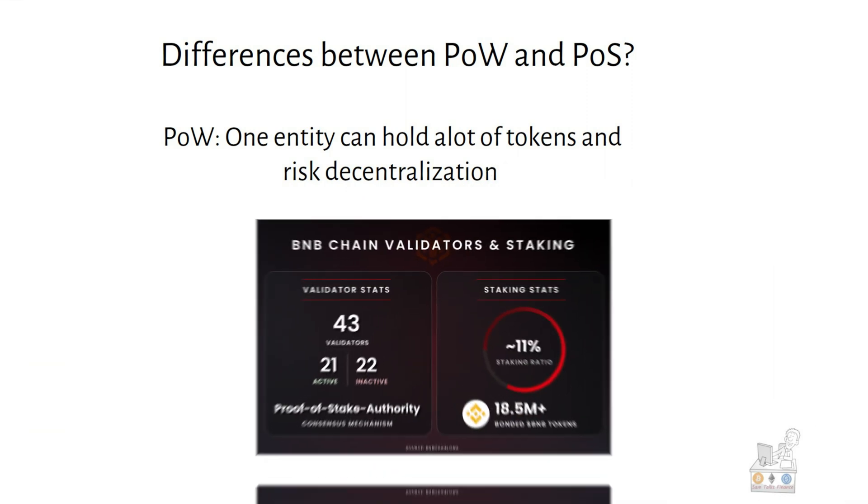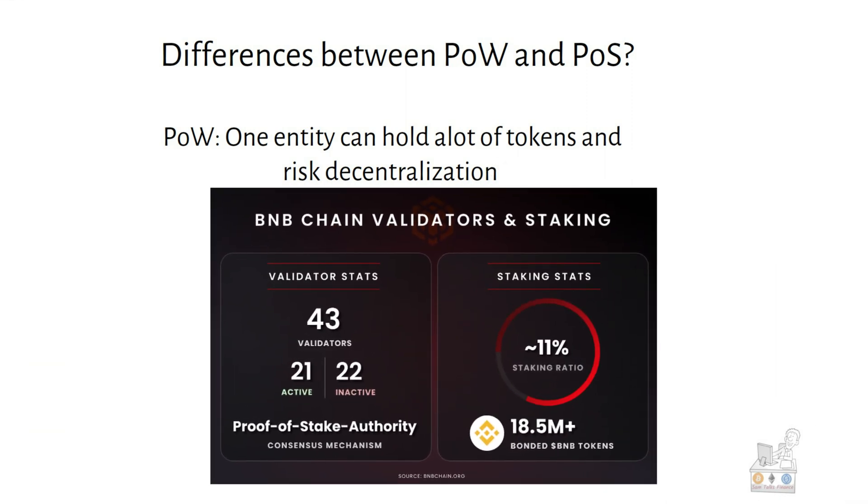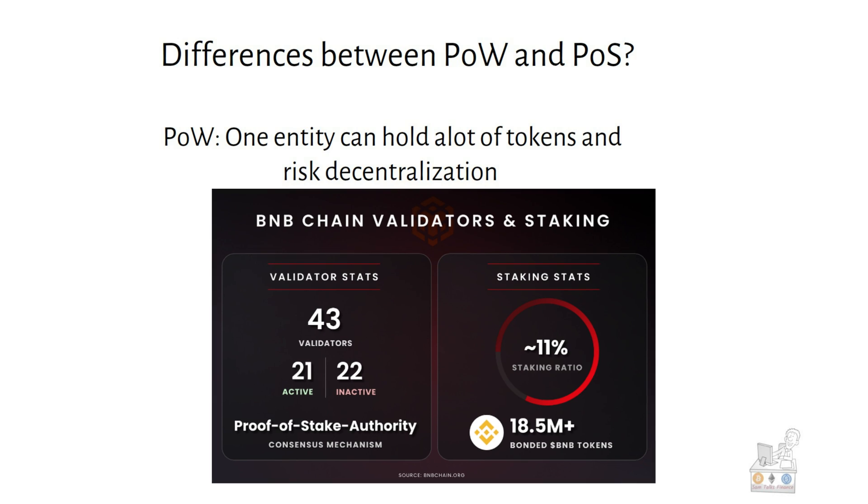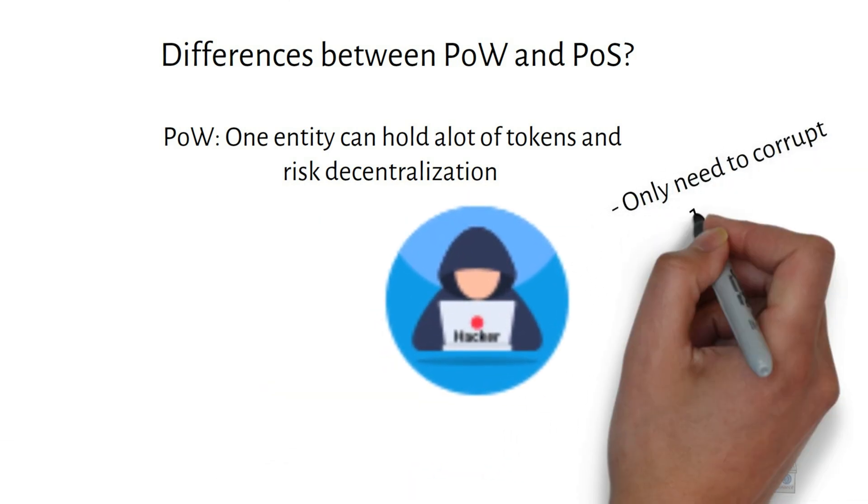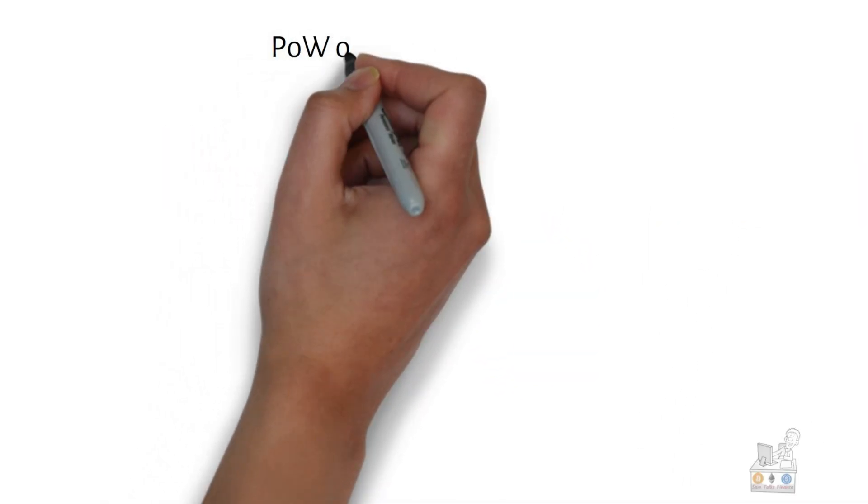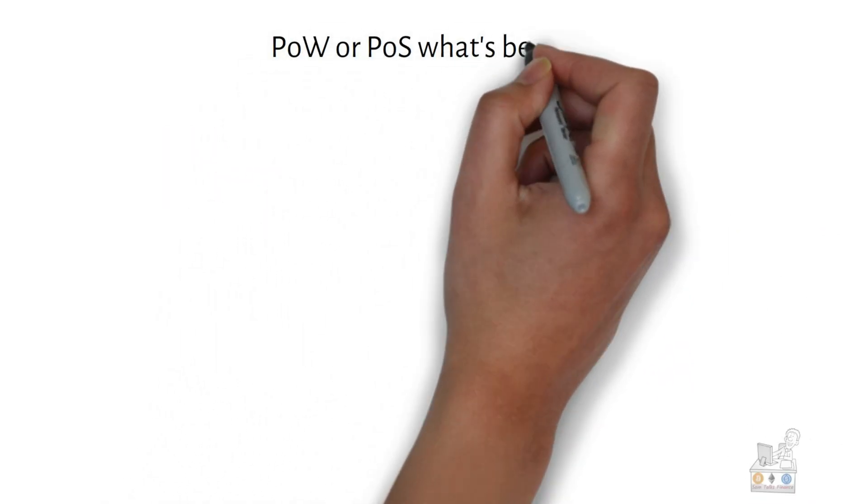For example, BNB network has only 21 validators, which is not very decentralized. If you compromise on security, you can corrupt 11 nodes. So in the two consensus mechanisms, which is better?